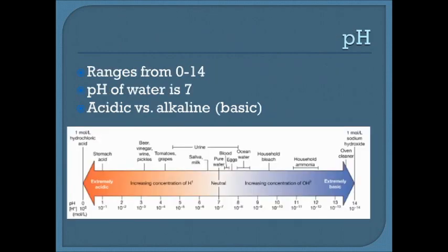pH ranges from 0 to 14. The pH of water is 7 — that's considered neutral. From there, anything below 7 is acidic, and anything above 7 is alkaline or basic.